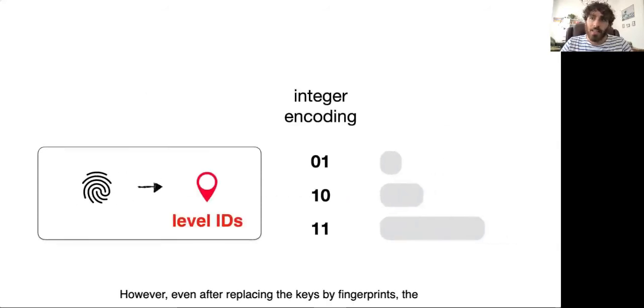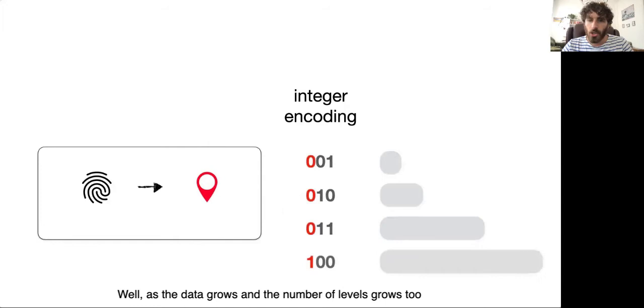However, even after replacing the keys by fingerprints, the level IDs can still emerge as a large memory overhead. To see this, suppose that the level IDs are encoded as integers. As the data grows and the number of levels grows too, the size of this integer encoding has to increase to be able to identify more levels uniquely.